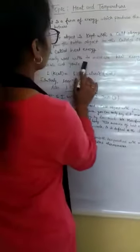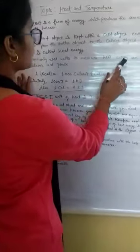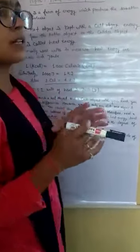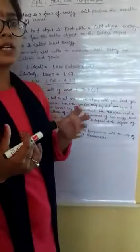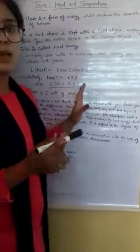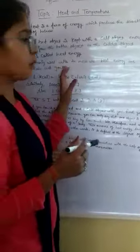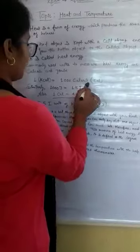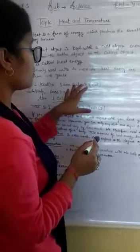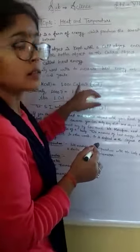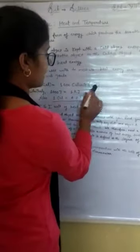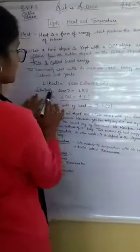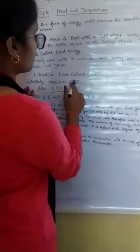The commonly used units to measure heat energy are calories and joules. 1 kilocalorie is equal to 1000 calories. Similarly, 1 kilojoule is equal to 1000 joules.